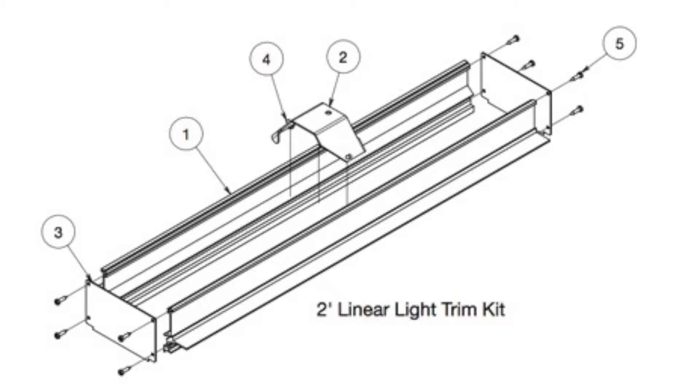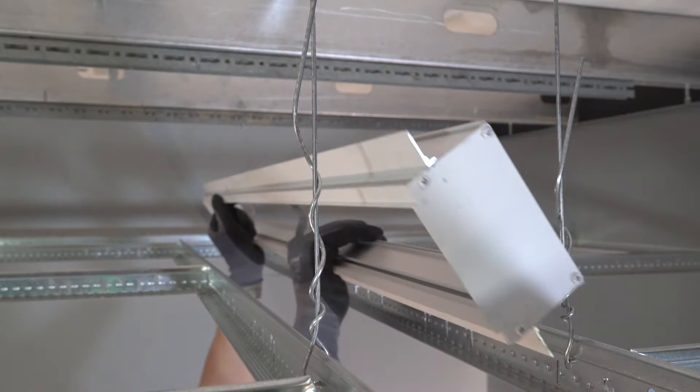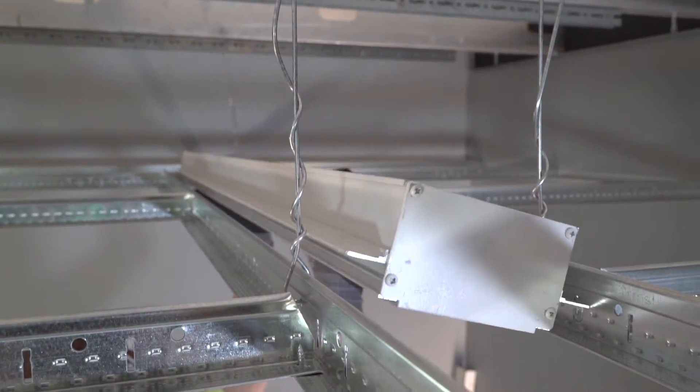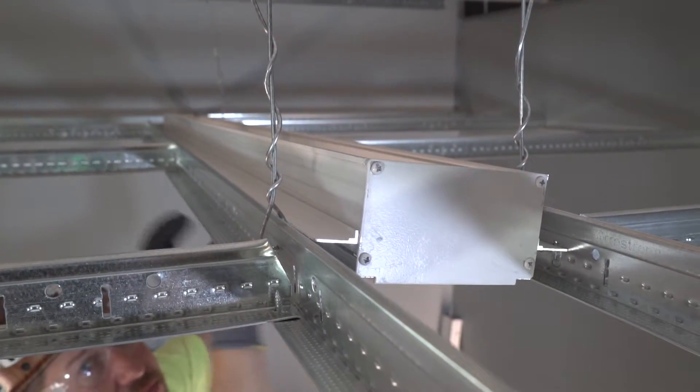First, specify the Armstrong drywall linear light trim kit, which is available in continuous or non-continuous lengths. The trim kit simply lays into drywall grid.